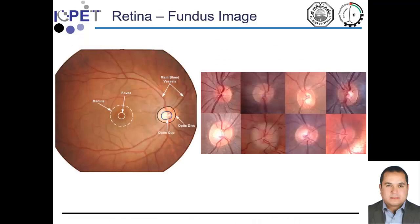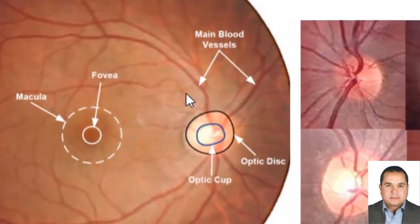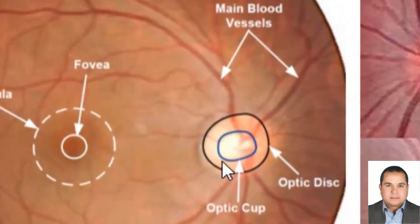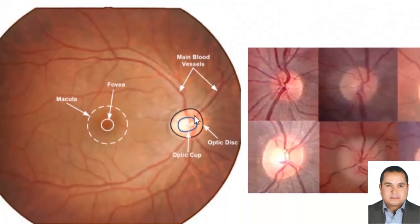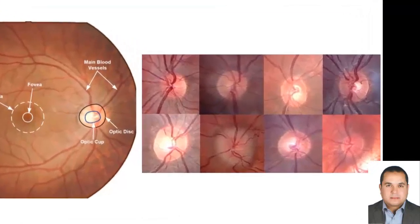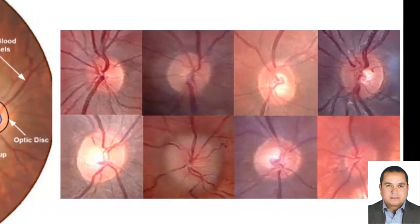In this slide, we can see the fundus image, which is the image of the retina of the human eye. Here is the optic nerve, which contains the optic cup and the optic disc areas. The optic cup is the center of the optic nerve, as we can see here. The optic disc is the surrounding area of the optic cup. Here are different shapes of the optic disc and the optic cup from different fundus images, showing how difficult it is for doctors to determine these areas.